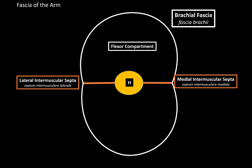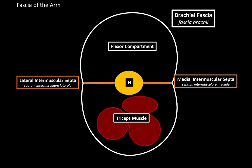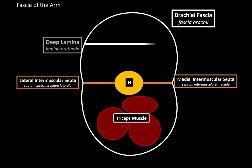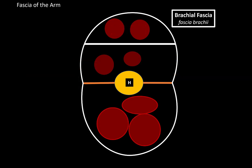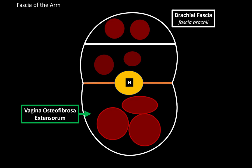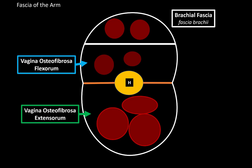The extensor compartment mainly contains the triceps muscles. The flexor compartment, however, is actually divided into two compartments by the deep lamina (lamina profunda). Superficially, we will find the biceps brachii, and deeper to that, we will find the coracobrachialis and the brachialis muscles. These compartments have names depending on whether they contain bone or not. The extensor compartment is called vagina osteofibrosa extensorum. The flexor compartment containing bone is called vagina osteofibrosa flexorum. And the superficial compartment is called vagina fibrosa flexorum — it doesn't contain bone, so it doesn't get the word 'osteo' before 'fibrosa.'